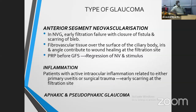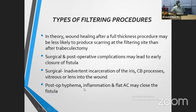Type of glaucoma is also an important factor. Anterior segment neovascularization, especially neovascular glaucoma — from CRVO, BRVO, or diabetic retinopathy — affects success. Endogenous inflammation, especially uveitic glaucoma, and the presence of aphakic and pseudophakic glaucoma may also affect filtering surgery success. Primary glaucoma has a better success rate when compared to secondary glaucoma.